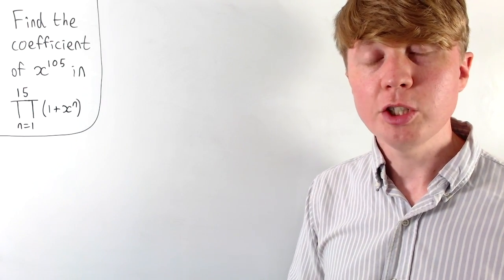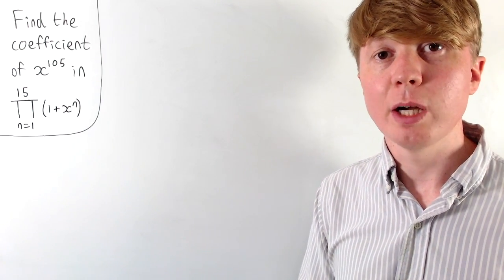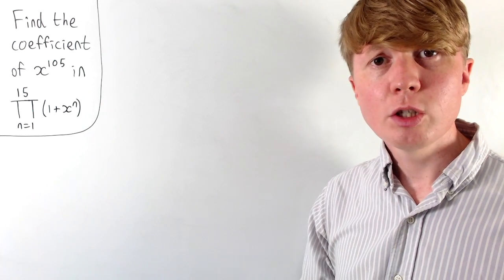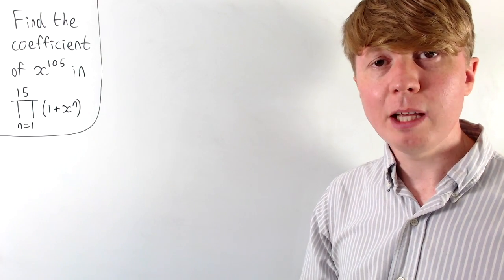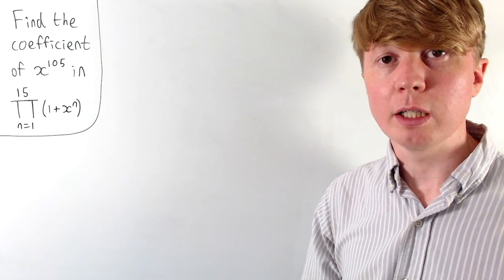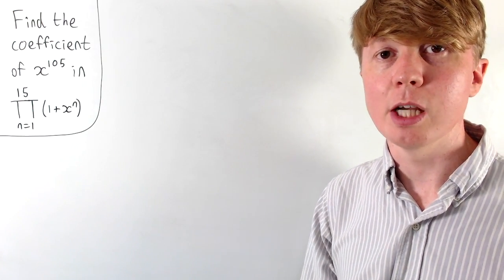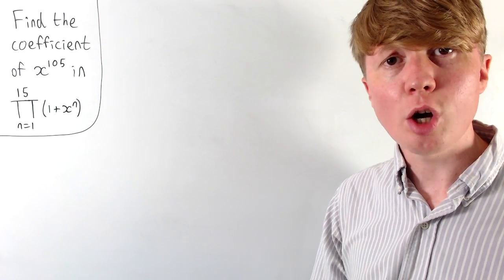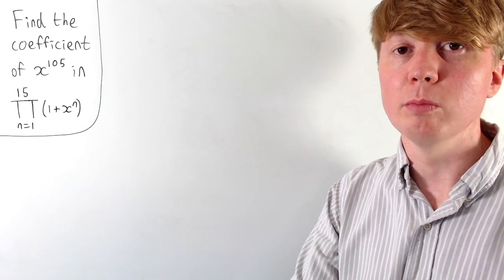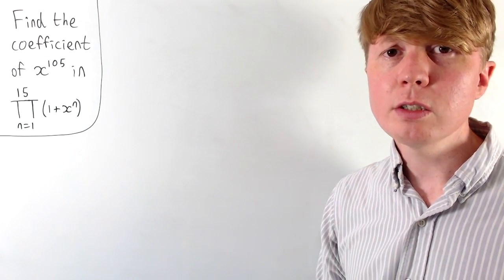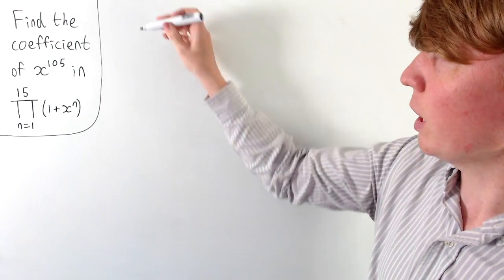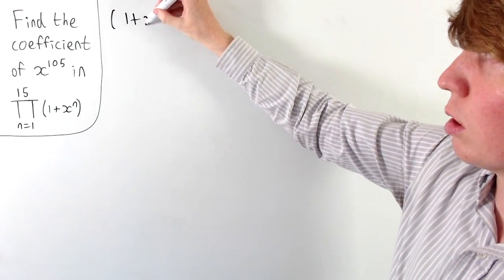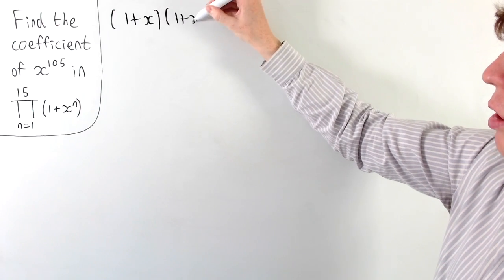We're going to find the coefficient of x to the power of 105 in this product. We don't want to expand all of these brackets — that would be far too much effort to do by hand — so we're going to take a more combinatorial approach to solving the problem. Just to get us started, we'll have a look at expanding the first few terms, just so that we can understand what's going on in this product.